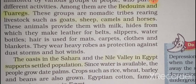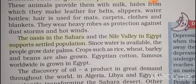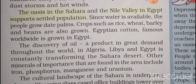Oases in the Sahara and the Nile Valley in Egypt support settled populations. The Nile is the longest river in the world. With the discovery of minerals like oil, people now live in the desert, and governments have built highways, high buildings, and towers to support the settlement of people. The Sahara today is being used for various purposes.